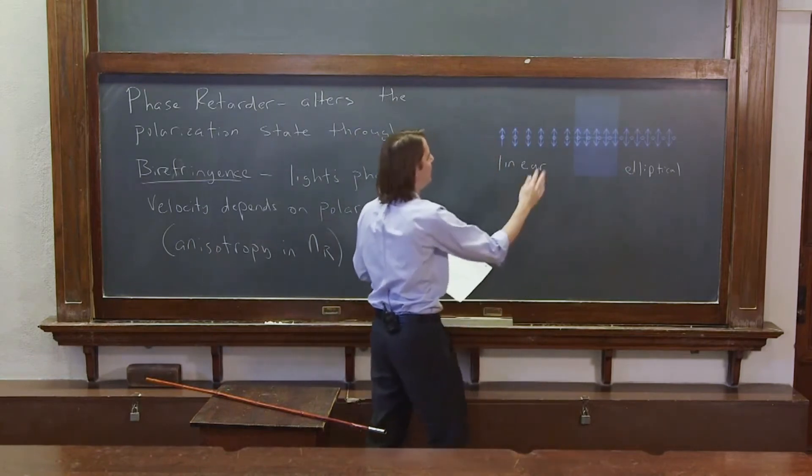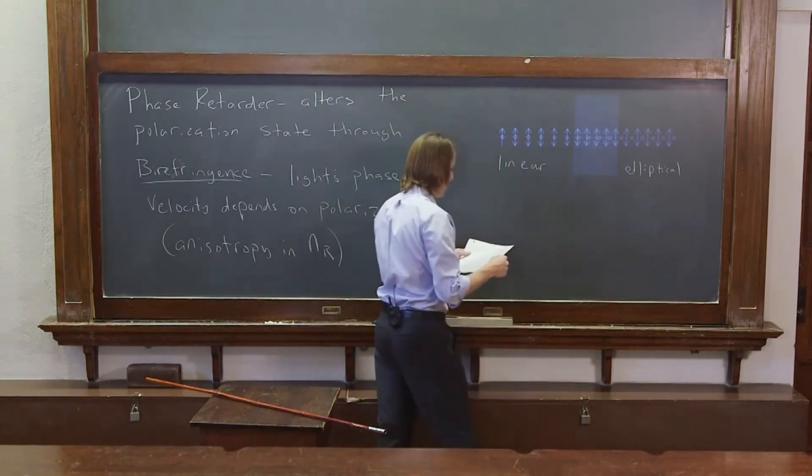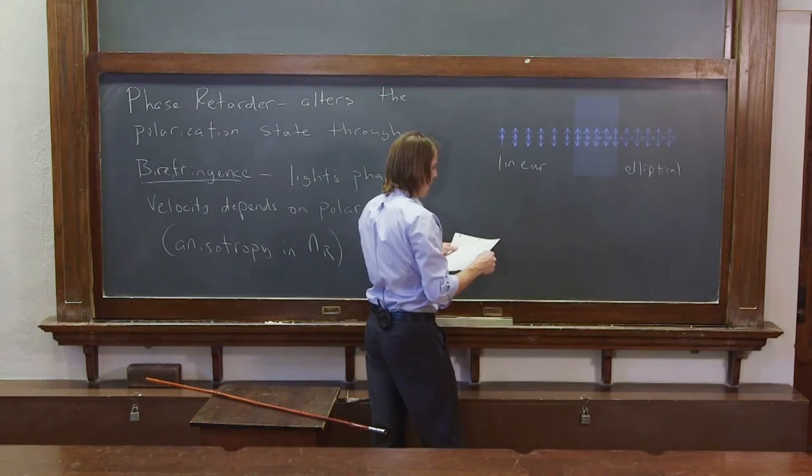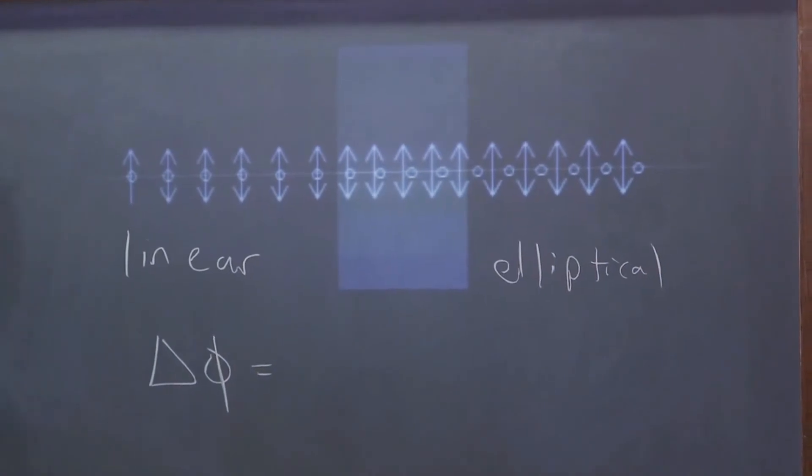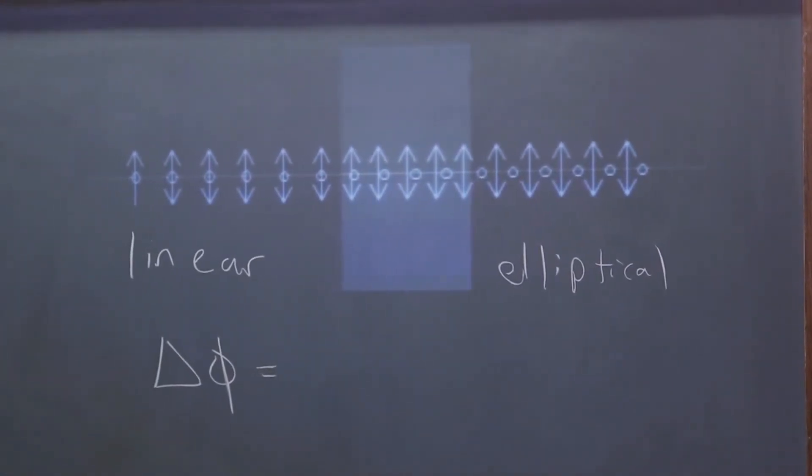So if you introduce some random phase shift, you could get pretty much anything. Let's see what it will look like then, the phase shift you would get between the horizontal and the vertical.